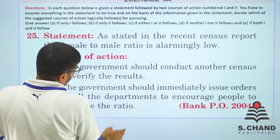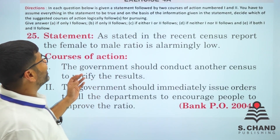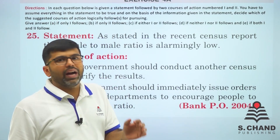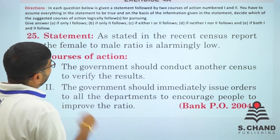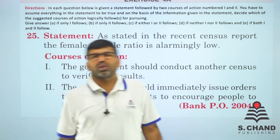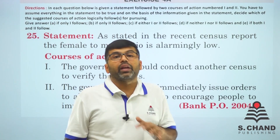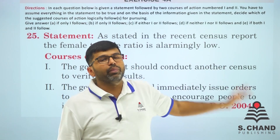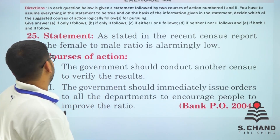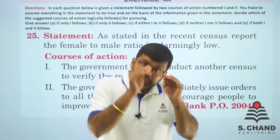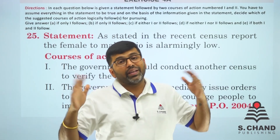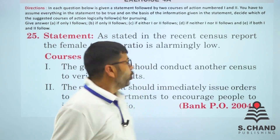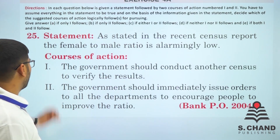Question 25 from Exercise 4A: 'As stated in the recent census report, the female-to-male ratio is alarmingly low.' Course of action I: 'The government should go through another census to verify the results.' Conducting another census just to re-verify would be costly and time-consuming — this is not a justified action.